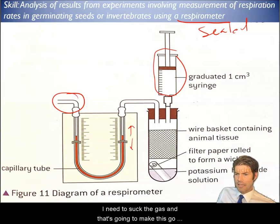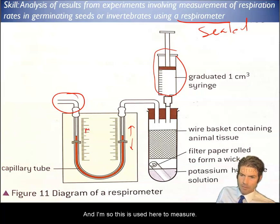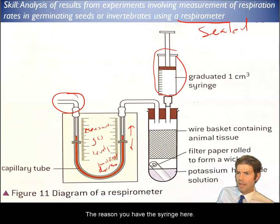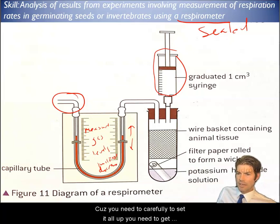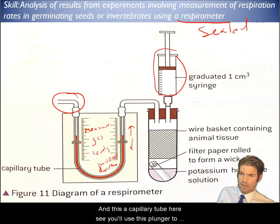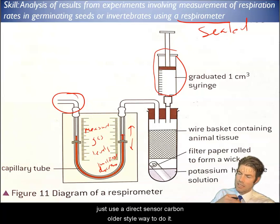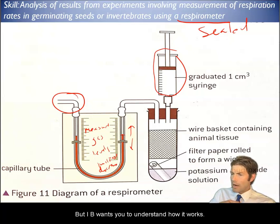Basically any gas that either enters or leaves this chamber is going to make this little mark go up or down. It's going to either suck the gas and that's going to make this go up, or it's going to push. So this is used to measure the gas levels - are they increasing or decreasing? The reason you have the syringe here is because you need to carefully set it all up. You need to get this level in this capillary tube to a certain spot, so you'll use this plunger to get it set up correctly.